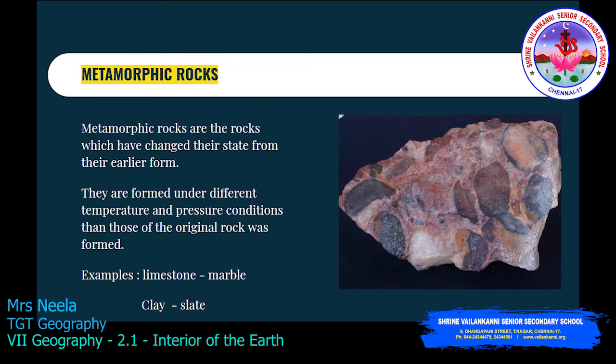The next one is the metamorphic rock. From the word 'metamorphic,' meaning they change form. Metamorphic rocks are rocks which have changed their state from their earlier form. They are formed under different temperature and pressure conditions than those under which the original rock was formed. Examples: limestone changes to marble, and clay changes to slate.